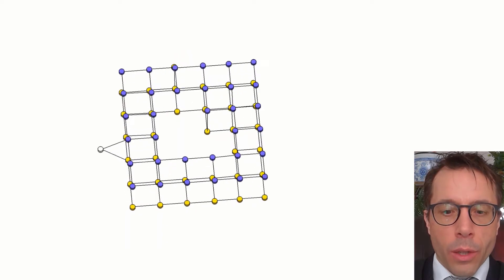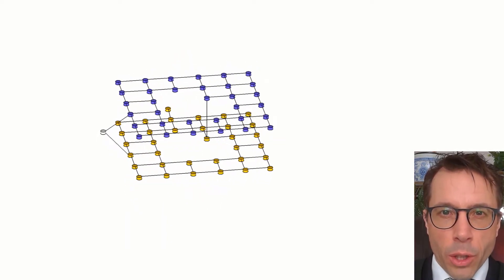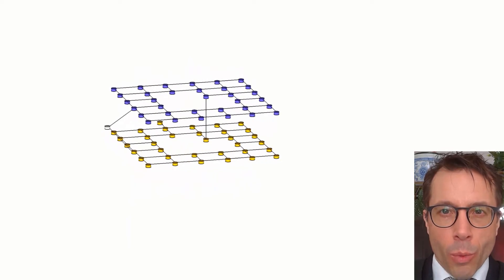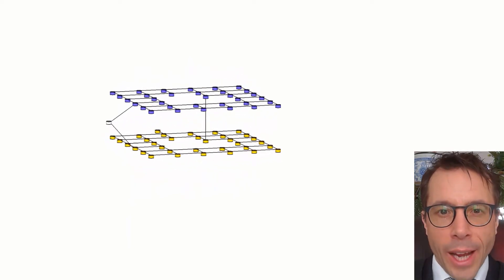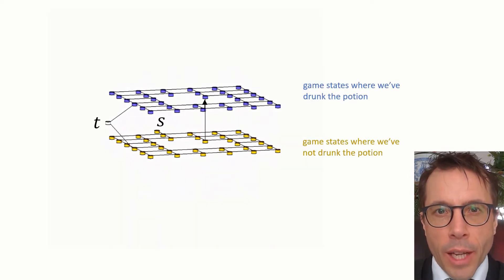This is what we can do. We won't just have one vertex per location on the map, we'll have one vertex for every possible game state. We can be at a location without having drunk the potion, and we can be at a location after having drunk the potion. And there's one particular location on the map where we can take the up-going edge from not drunk to have drunk.